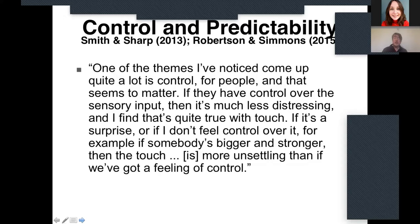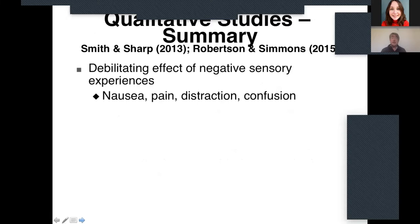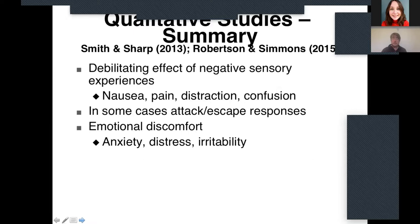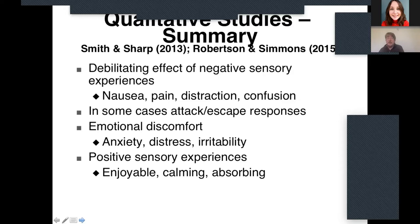To summarise these qualitative studies: what came through very strongly is the debilitating effect of negative sensory experiences — people talking about nausea, pain, distraction, and confusion, with attack or escape responses in some cases. The emotional discomfort — anxiety, distress, and irritability — can clearly spoil the day of the person experiencing these things. Yet on the other hand, there are positive sensory experiences that are enjoyable, calming, and absorbing. This contradictory nature of sensory factors in autism is really apparent in both papers.